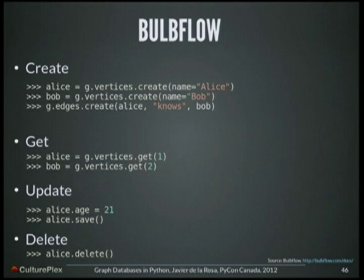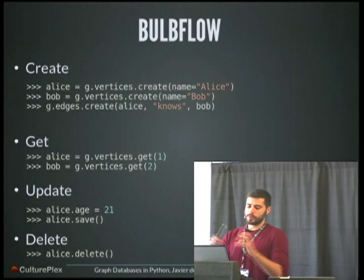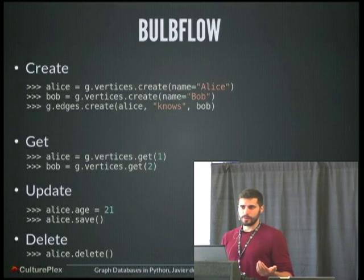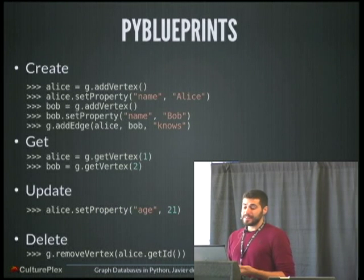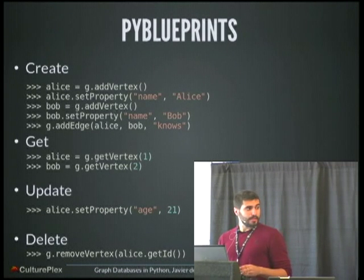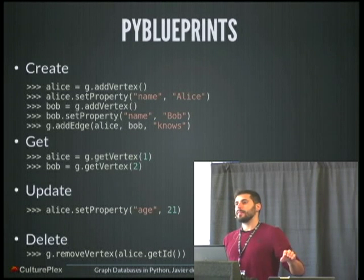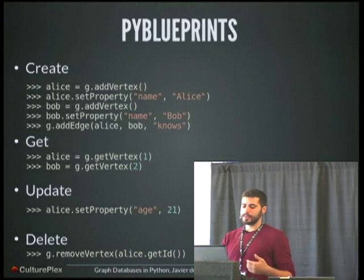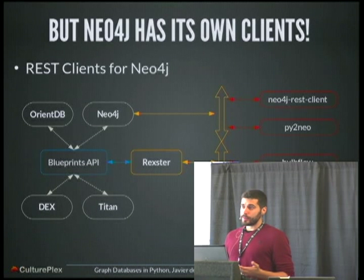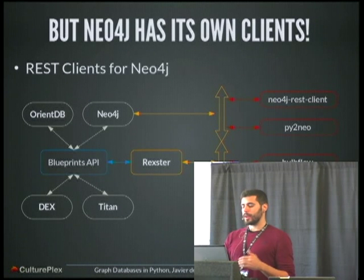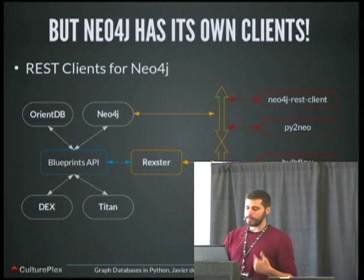We have Bulbs and we have PyBlueprints, and we also have Python-Blueprints which is Java-based so we won't discuss it. This is an example of Bulbs — to create, get, update, and delete elements. You have your object G, then you have vertices create — the same as Neo4j REST client — get elements using the IDs, update, and delete. PyBlueprints is totally based on the Blueprints API which is Java-based, so that's the reason PyBlueprints is a bit more verbose. But it's useful when you have other kinds of databases. Neo4j — and maybe OrientDB also — has its own client, so you can connect directly to Neo4j without using Blueprints API or Rexster.